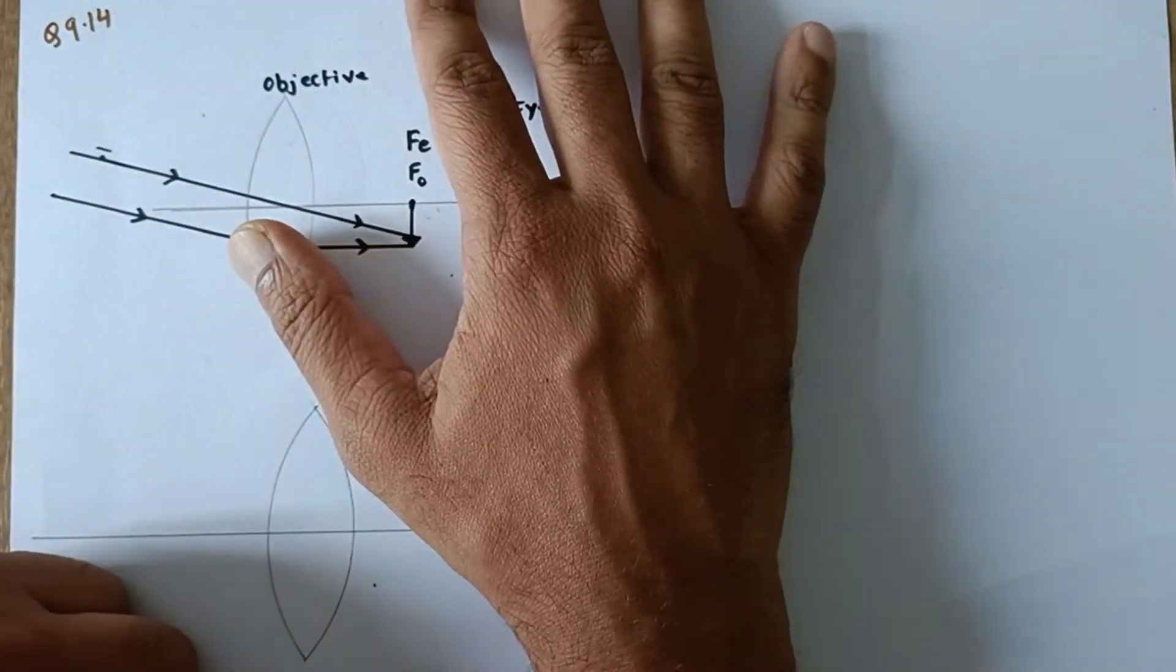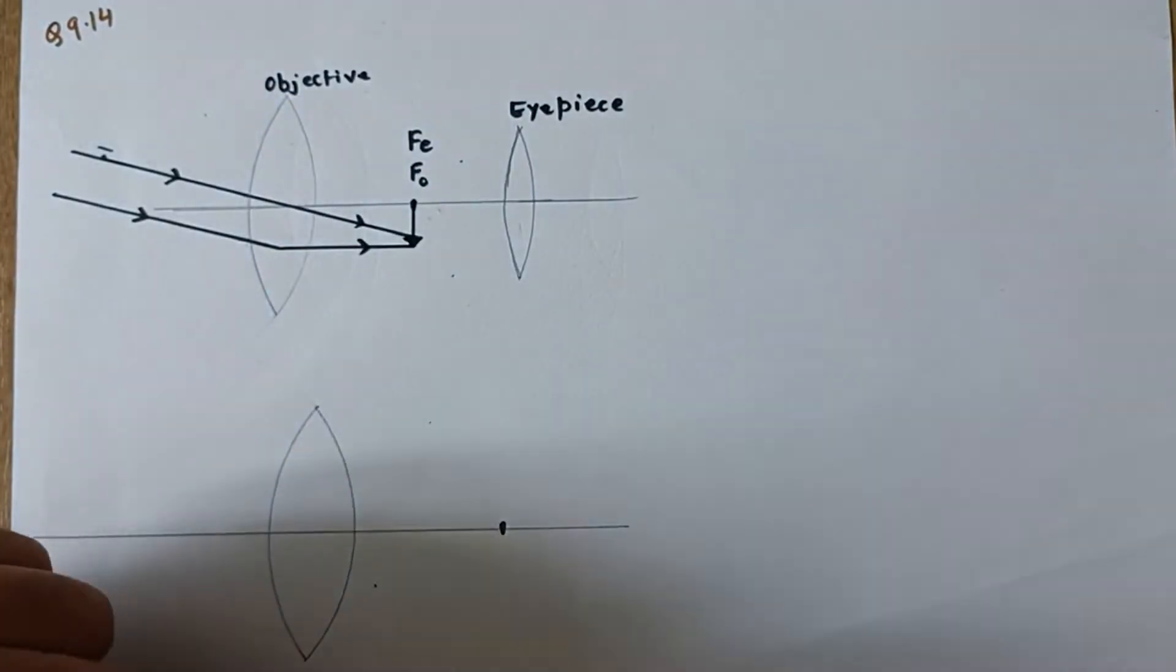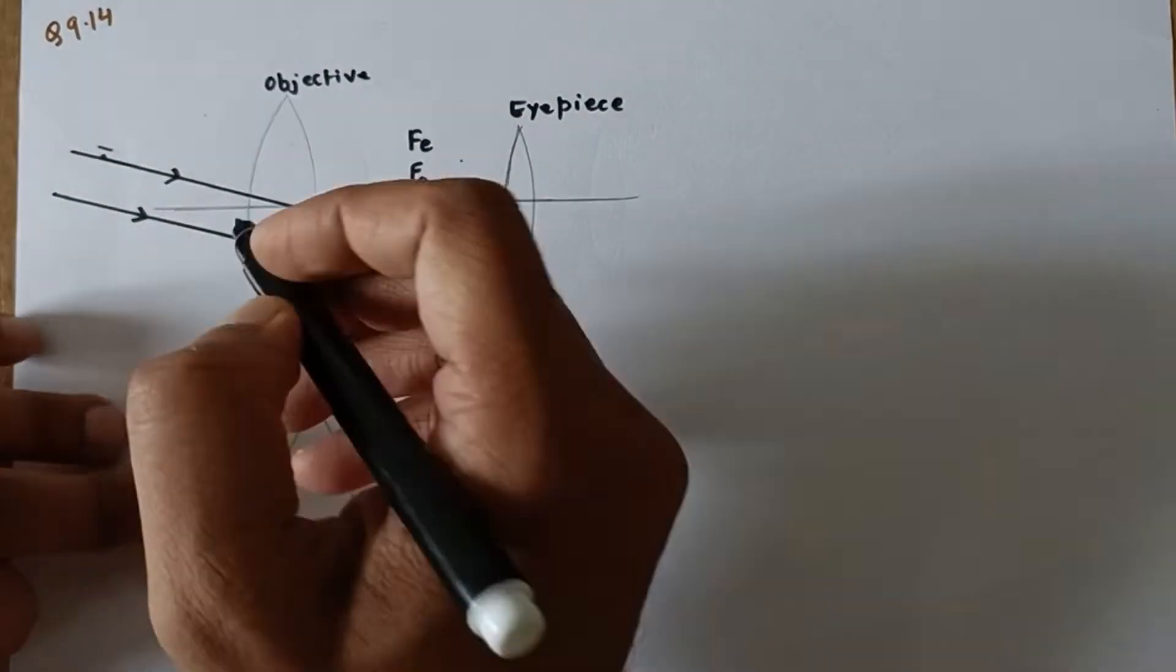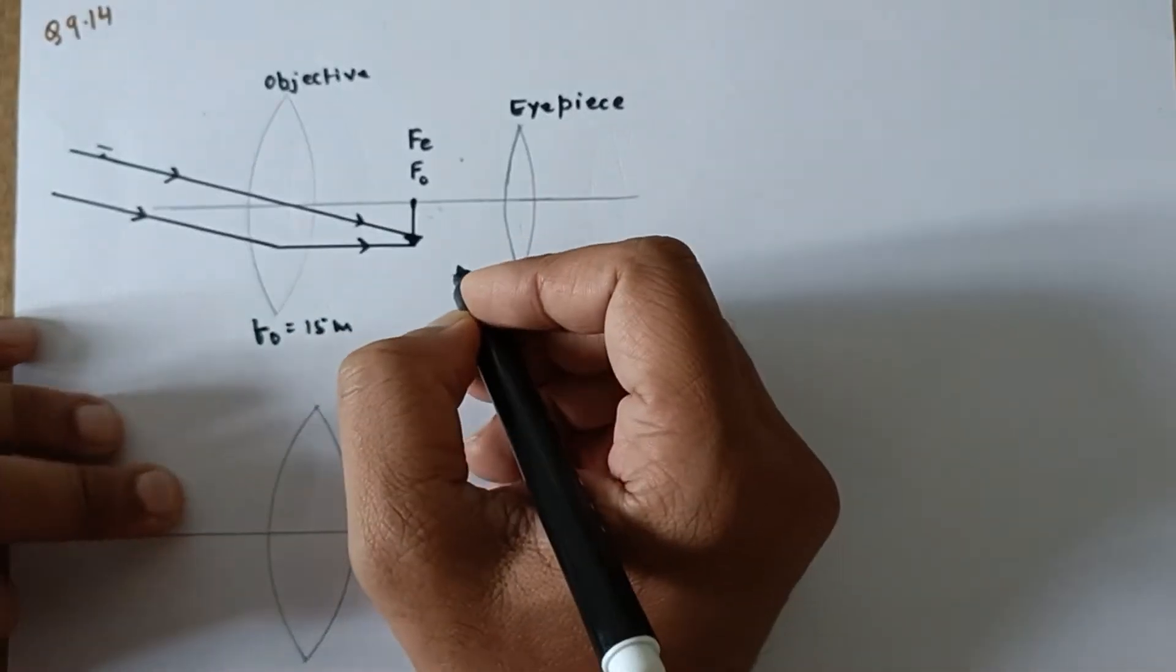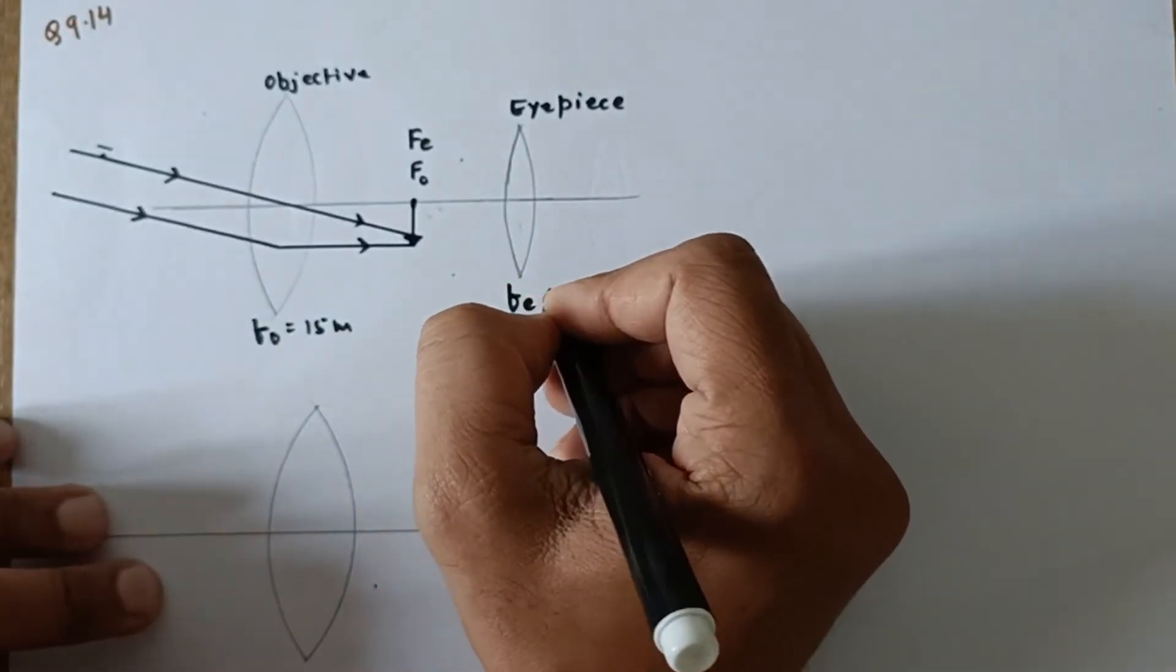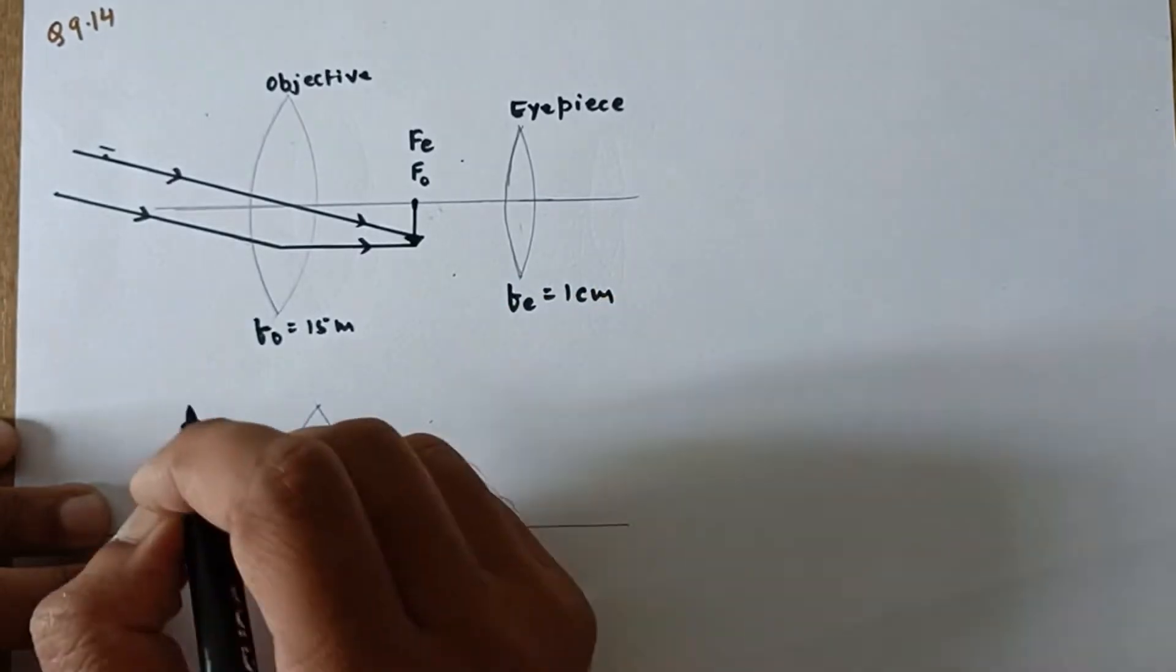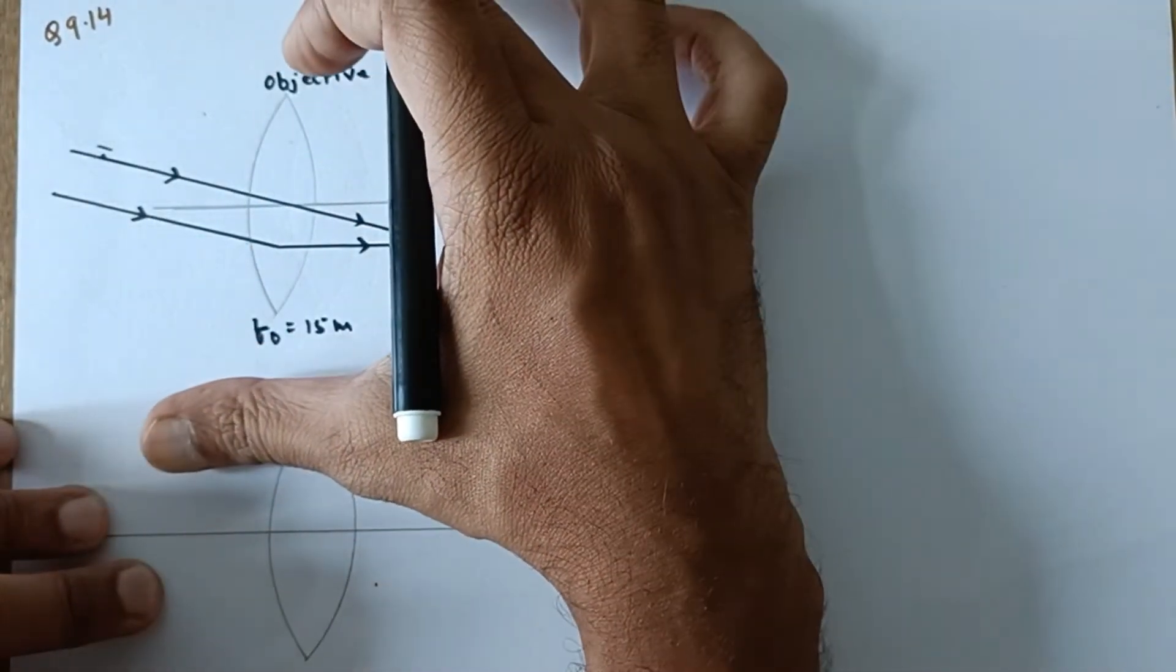The problem says that there is a giant telescope and the focal length of the objective is given as 15 meters and the focal length of the eyepiece is very very small, only one centimeter. So you can imagine how big this lens is.